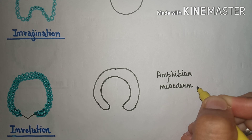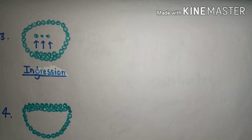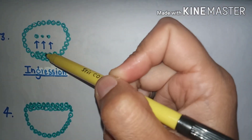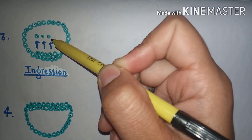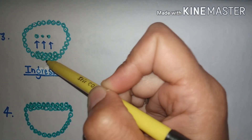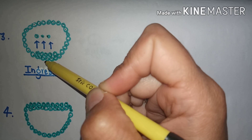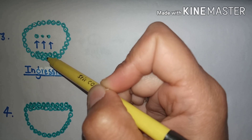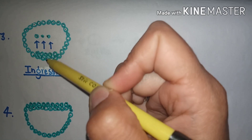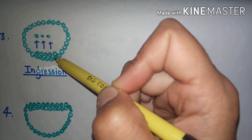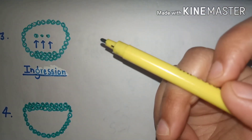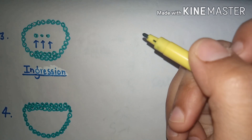The next type of cell movement is known as ingression. Ingression means to enter — when an individual cell enters inside the embryo from the outer layer, that migration of individual cells into the embryo is known as ingression.